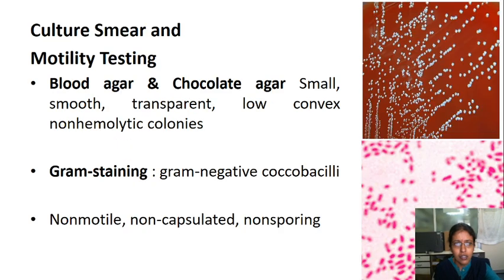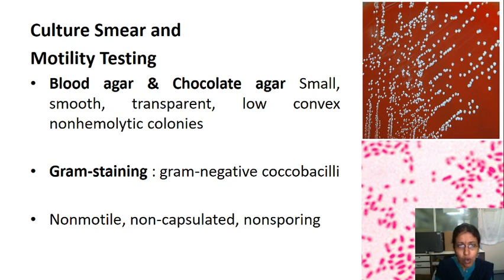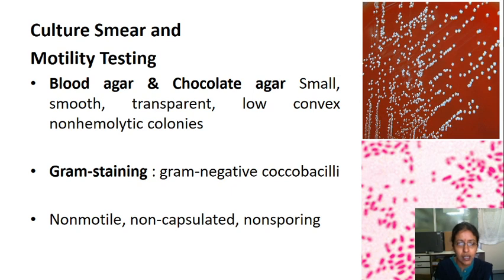On routine media (blood agar and chocolate agar), Brucella forms small, smooth, transparent, low convex, non-hemolytic colonies. On Gram stain, they appear as gram-negative coccobacilli. These are non-motile, non-capsulated, and non-sporing organisms.